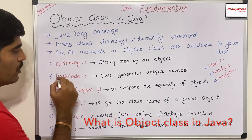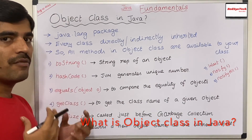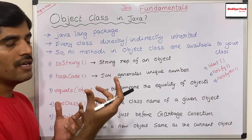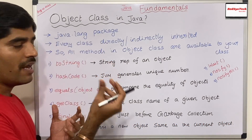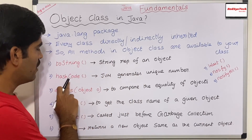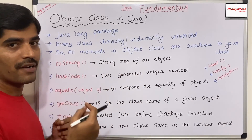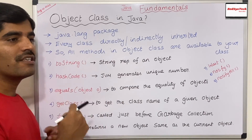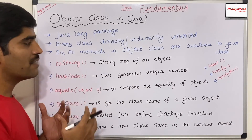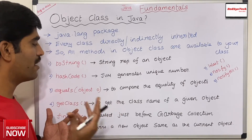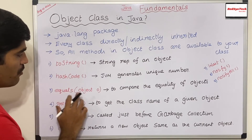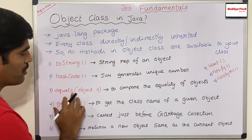hashCode: when the Java program gets executed, the JVM internally stores objects in memory. The JVM generates a unique number — not actually the memory address of an object, but a hexadecimal representation of the memory address. This is unique for every object. And there is an equals method, which is used to compare whether two objects are equal.